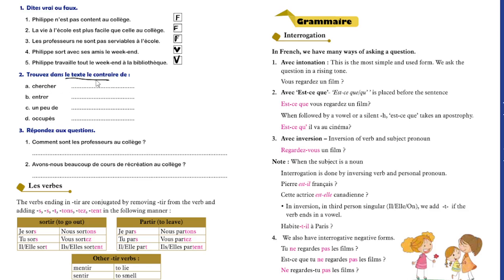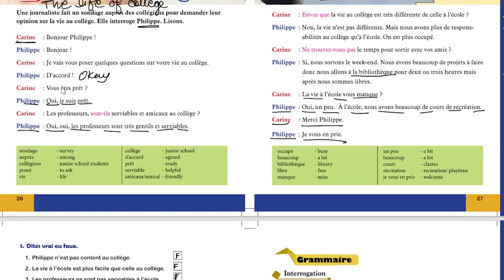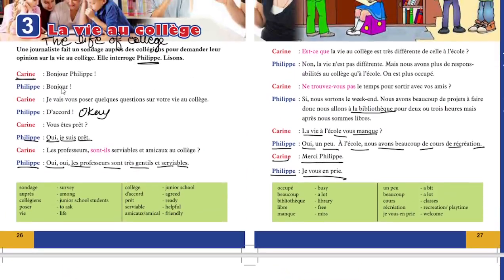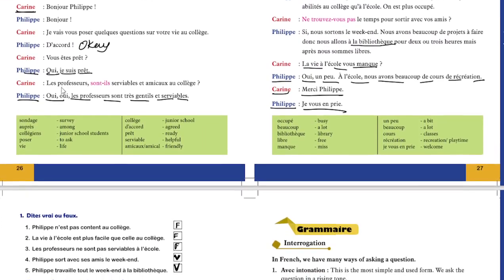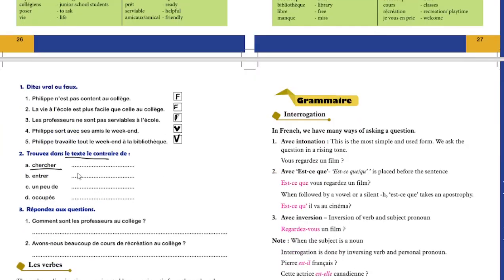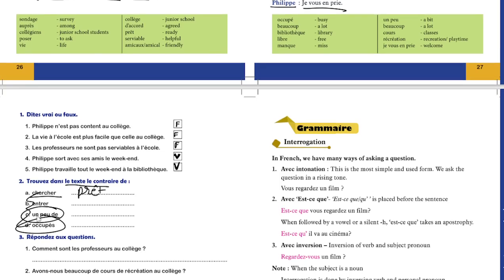Now, you have to find the opposites. Chercher means to search, so its opposite would be trouver, to find. Similarly, you can do occupé. Un peu de means a bit. So you'll write beaucoup, that is a lot of.